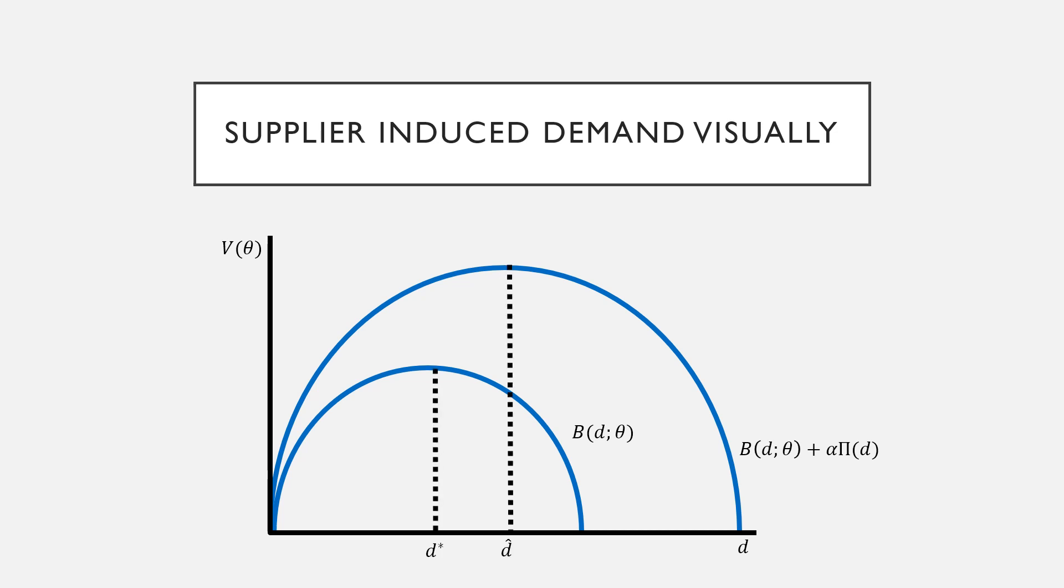We're going to notice that our optimal treatments for D star and D hat depend on if there is a profit motive involved and correspondingly we can see that the difference between these two is our induced demand. This visual shows that there is some induced demand here. You're looking at the difference between these two objectives, the first where our physician is just considering patient benefit and the second where they're mixing in their profit motive.